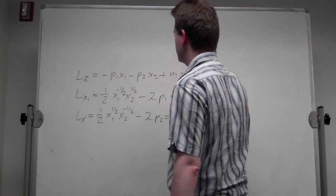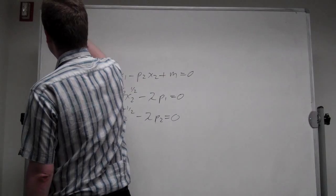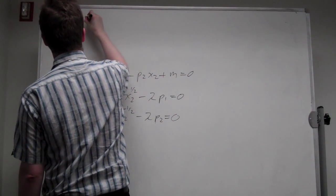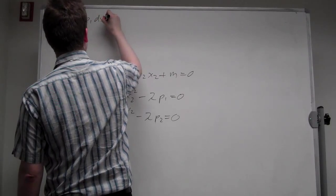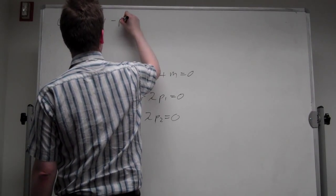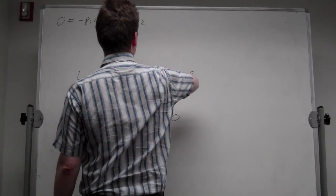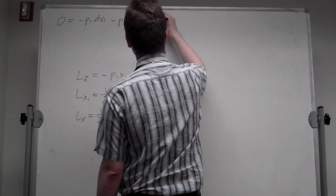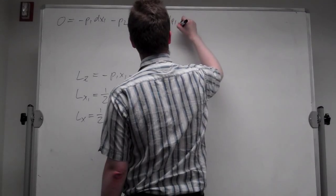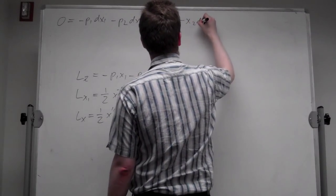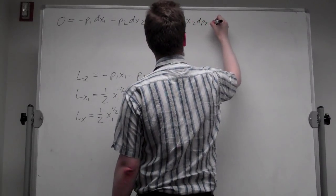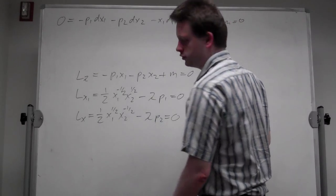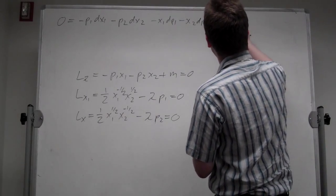Taking the first equation and totally differentiating, we have: 0 equals minus p1*dx1 minus p2*dx2. There's no lambda in it, so we go straight to p1 and p2: minus x1*dp1 minus x2*dp2 plus dm equals 0.